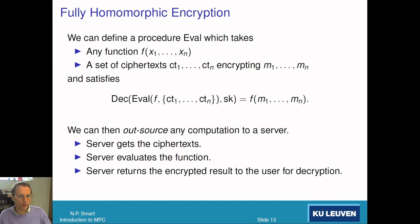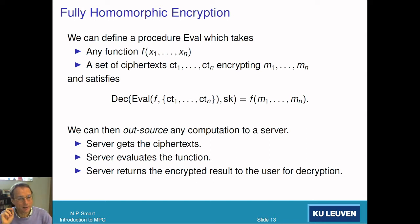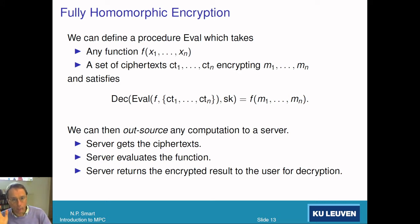This means we can define a procedure called eval. What eval does is take any function f with n inputs, and given a set of ciphertexts ct1 through ctn encrypting messages m1 through mn, we can apply eval to those ciphertexts, then decrypt, and get the output which is the function applied to the messages.